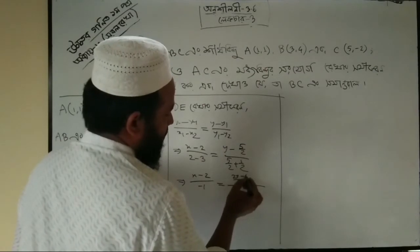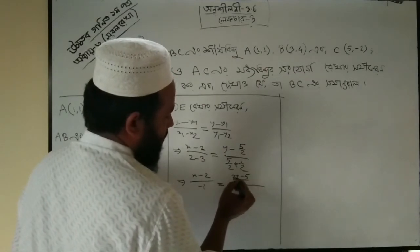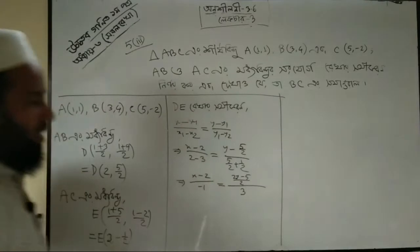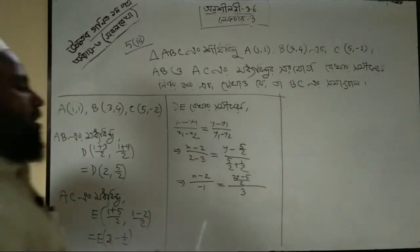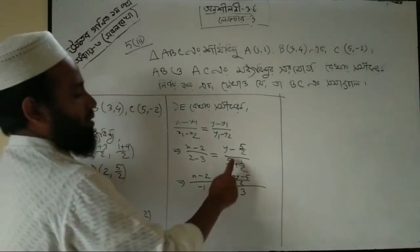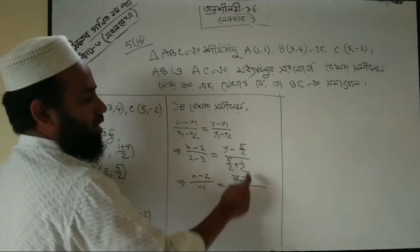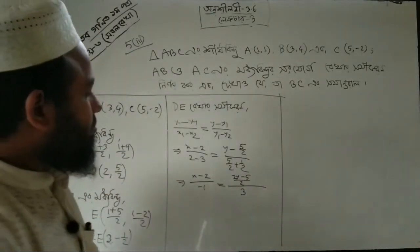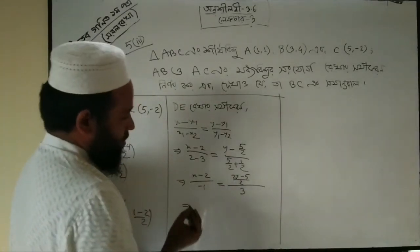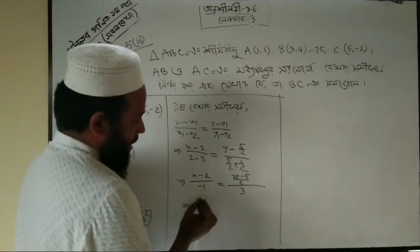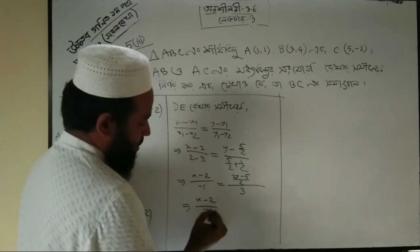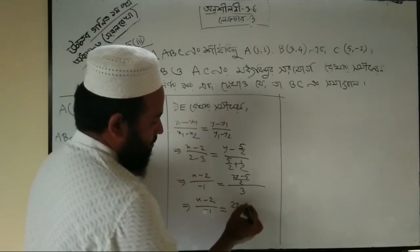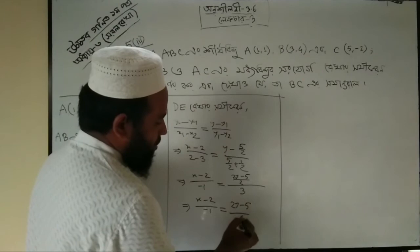Now, 2i minus 5 by 2, r is 3. We will write: 5 by 2, r is 3.